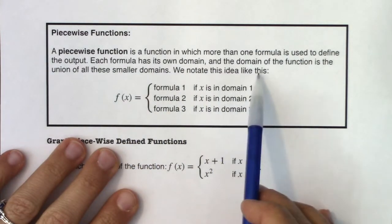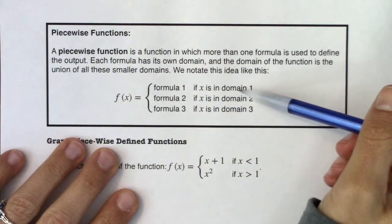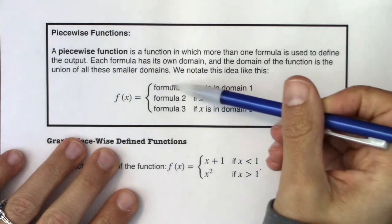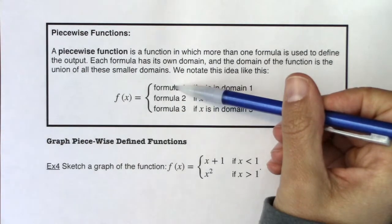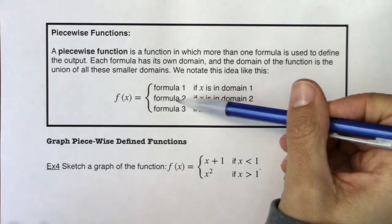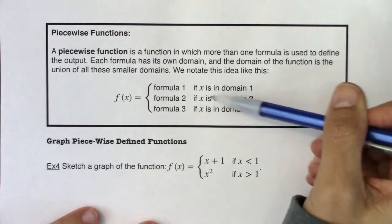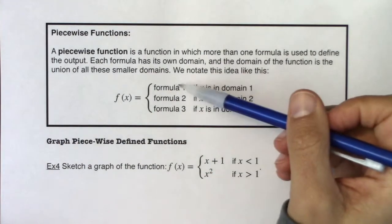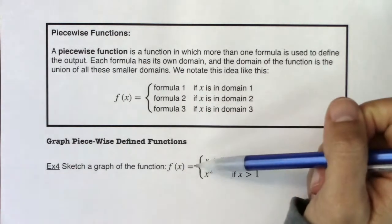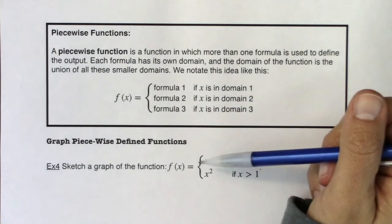We notate this idea like this: we'll have some function defined here and a domain, a function defined here and a domain, a function defined here and a domain. So we're taking a piece of this graph for a certain domain, a piece of that graph over another domain, and again a piece over another domain. You can have as many formulas as you want — you need at least two to technically be called a piecewise function, but you could have seven or ten. They get pretty messy with that many pieces, but there are infinite possibilities.